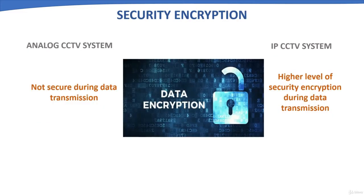Security encryption: Analog CCTV cameras capture video and transmit it over coaxial cable, which can be easily hacked — there is no security during data transmission. In an IP CCTV system, cameras capture video and encrypt the data before sending it to the NVR. The NVR also further encrypts this data, adding an additional layer of security, resulting in a higher level of security encryption during data transmission.